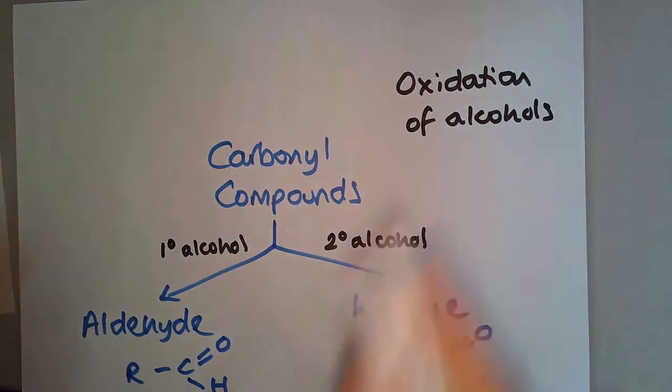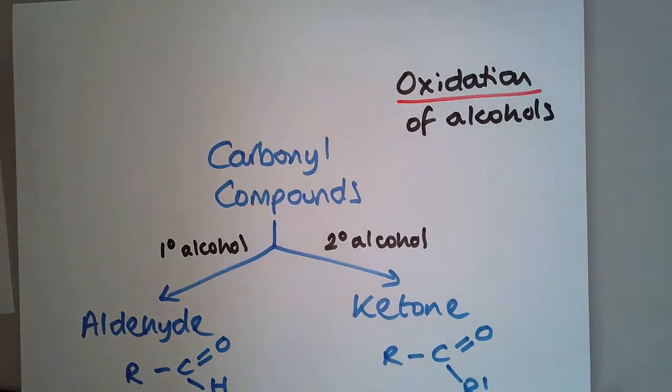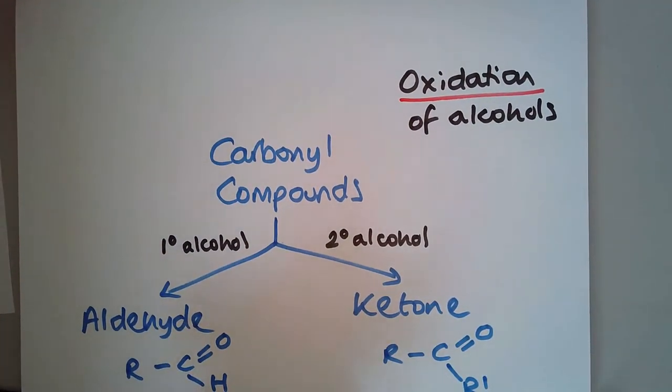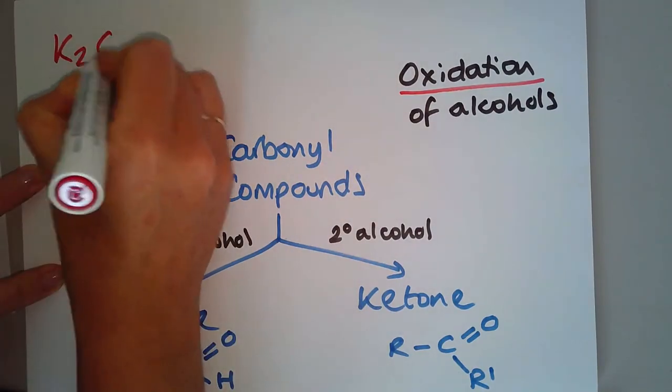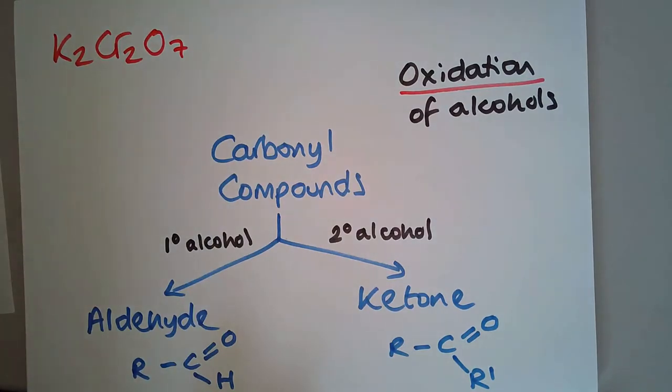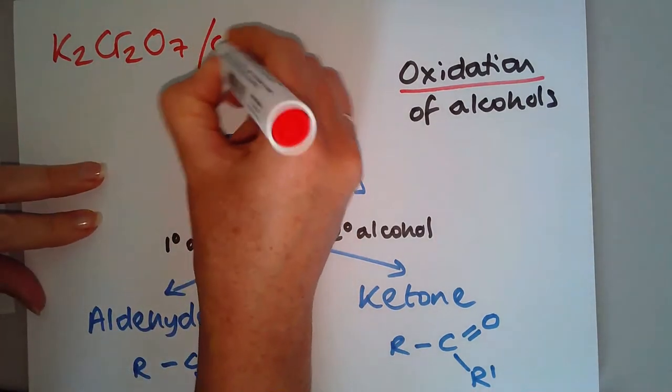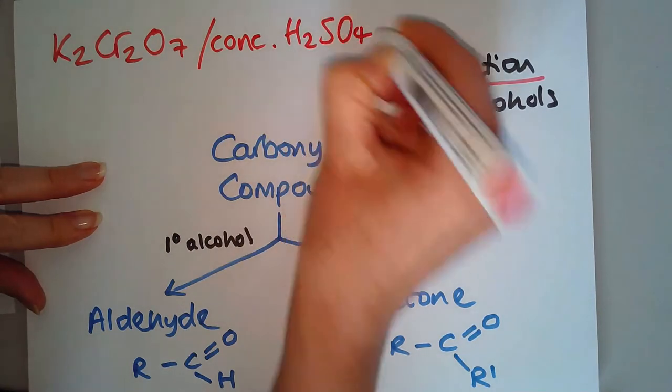For oxidation, we need an oxidizing agent, and the oxidizing agent is potassium dichromate with formula K₂Cr₂O₇. Remember we should always put that with conc. acid, so conc. sulfuric acid H₂SO₄.